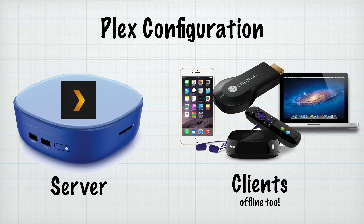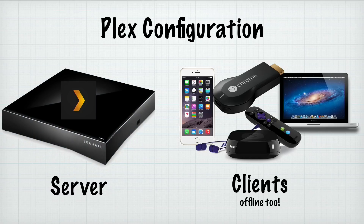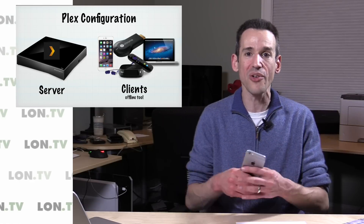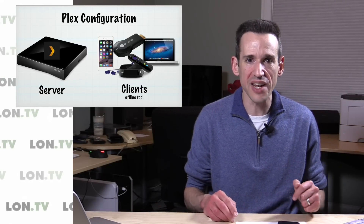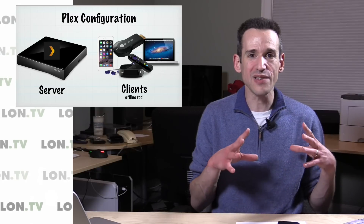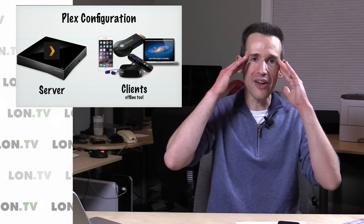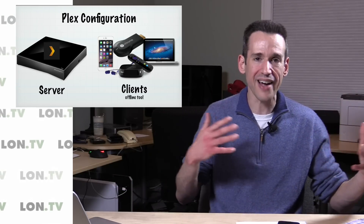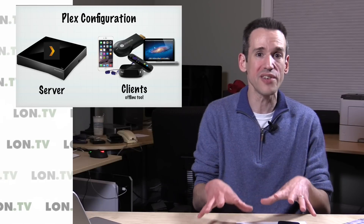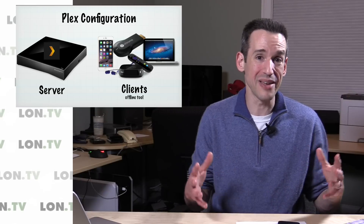There are two components to playing back media via Plex. The first is the server — that's the computer or network attached storage device where your media files are stored, organized, and transmitted. Then you have a client, which could be anything from an iPhone to a Roku box to a game console to a computer. The Plex server is smart enough to know how to make the video work on whatever target device you're sending it to, so you don't have to worry about having a movie in five or six different formats.